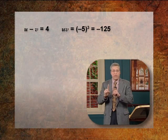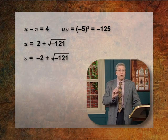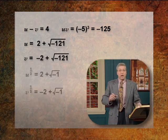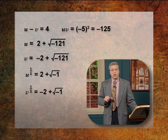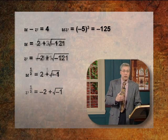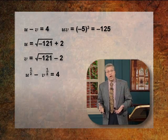The key to the solution is to work with square roots of negative numbers. Bombelli showed that the two numbers whose difference is 4 and whose product is −125 are (2 + √−121) and (−2 + √−121). Taking the cube roots of those gives (2 + √−1) and (−2 + √−1). Taking the difference gives 4 — the solution. So you get the correct answer, but on the way you need to work with square roots of negative numbers.